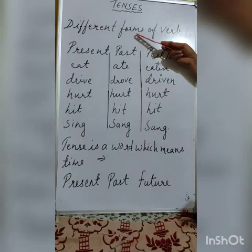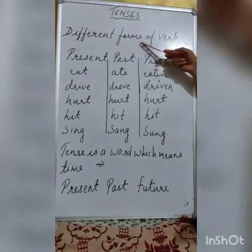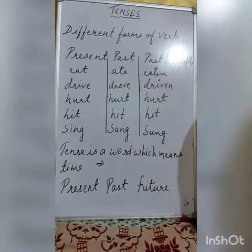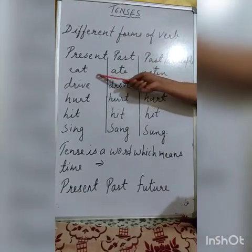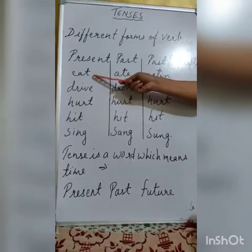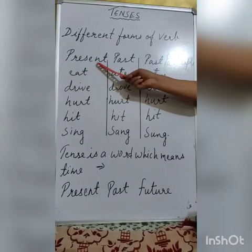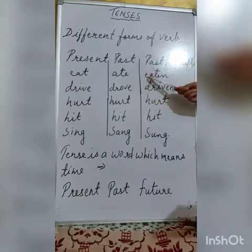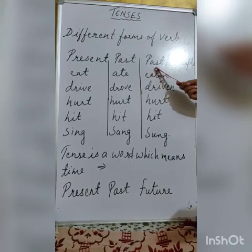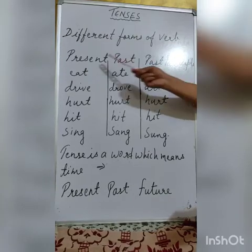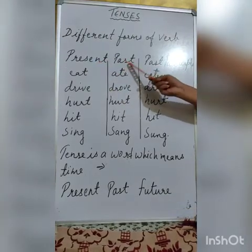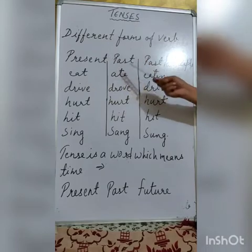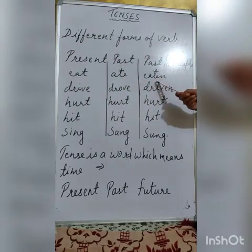Let us take a look at the different verb forms. There are three forms of the verb: present, past, and past participle. Let us take an example of the verb 'eat.' Eat is the base form of the verb, also known as V1. Ate is the past form of the verb, V2. And eaten is the third form — that is the past participle form — also known as V3.